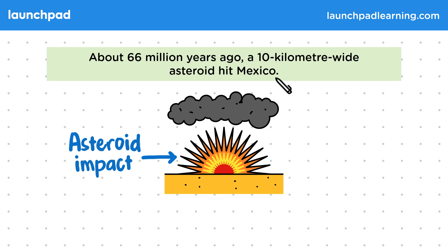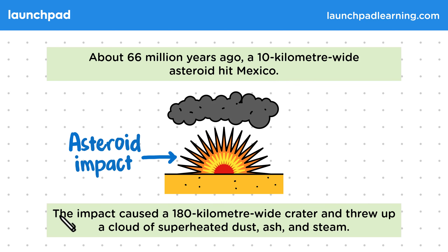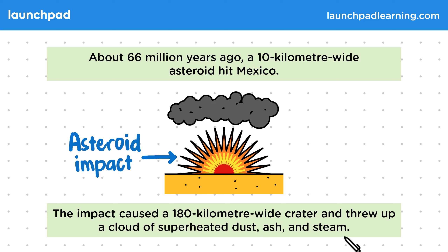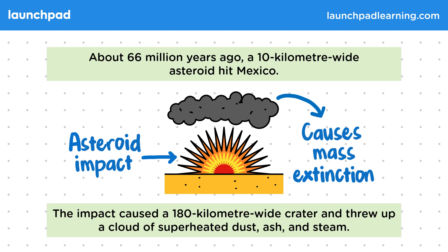So what actually led to the mass extinction? The impact caused a 180km wide crater and threw up a cloud of superheated dust, ash and steam. It was actually this cloud which caused the mass extinction event.